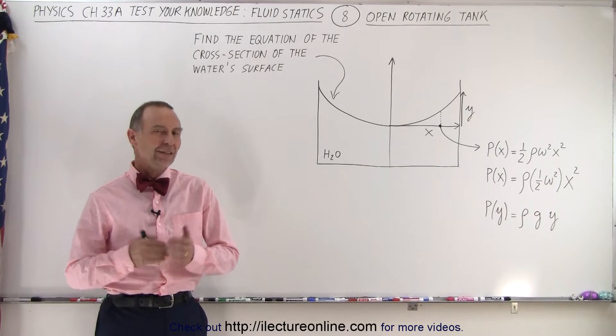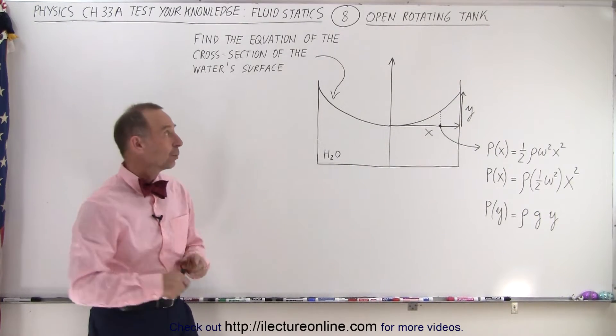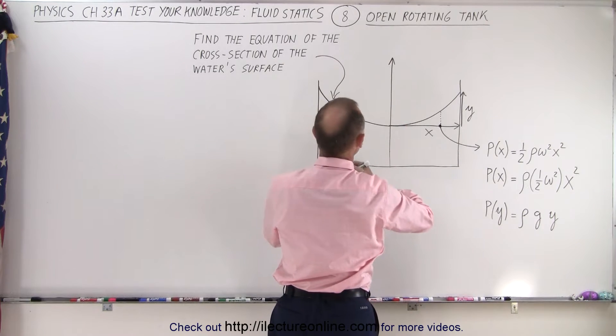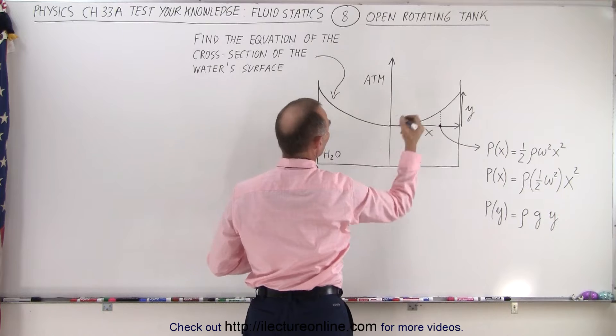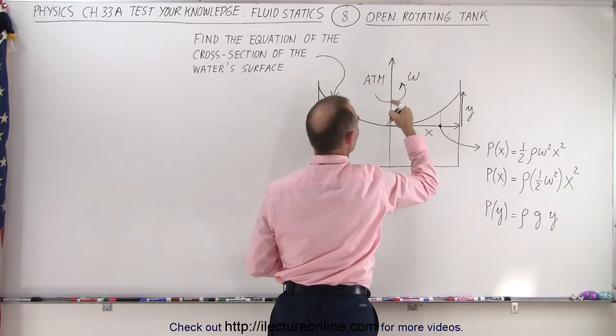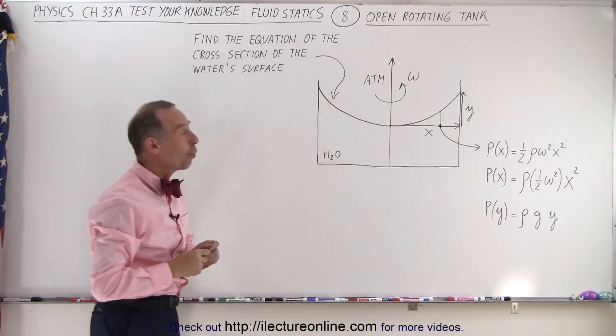Welcome to our lecture online. In this problem we have an open tank, which means it's open to the atmosphere at the top, and the whole tank is rotating around the central axis at the angular velocity omega.